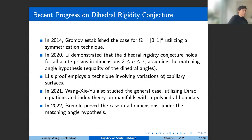The dimension constraint in Li's work arises from regularity issues for capillary surfaces. In 2021 Wang, Xia, and Yu studied the general case using the Dirac equation and index theory on manifolds with polyhedral boundary. Finally, in 2022 Brendle proved the case in all dimensions under the matching angle hypothesis, working with the Dirac equation on smooth domains via an approximation procedure.